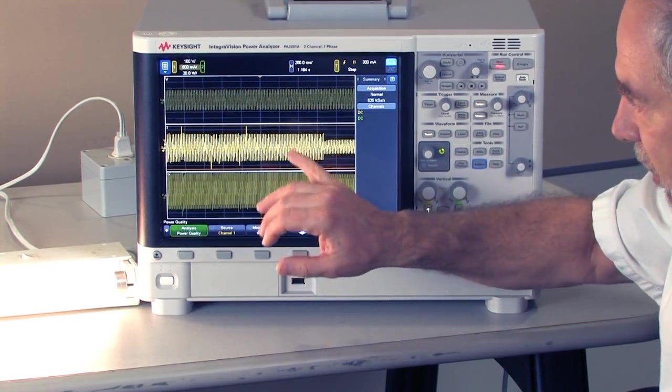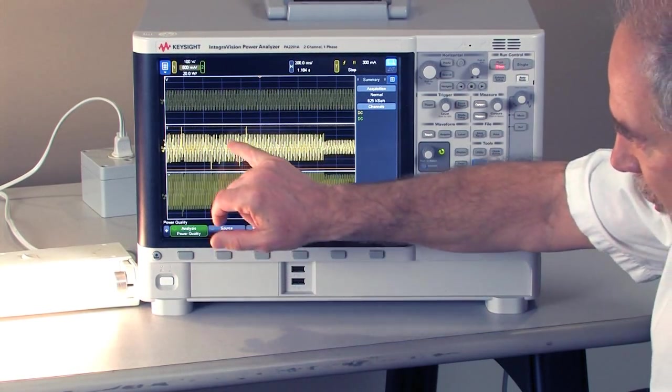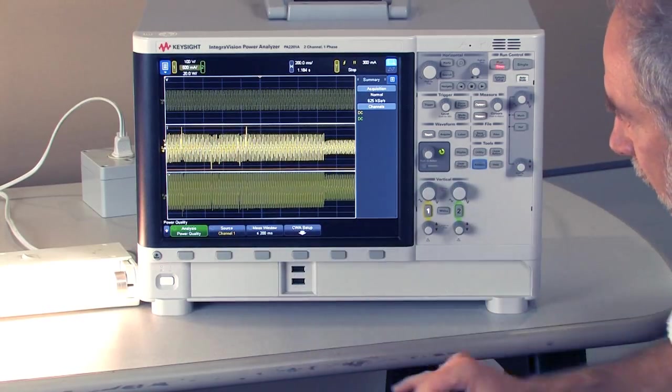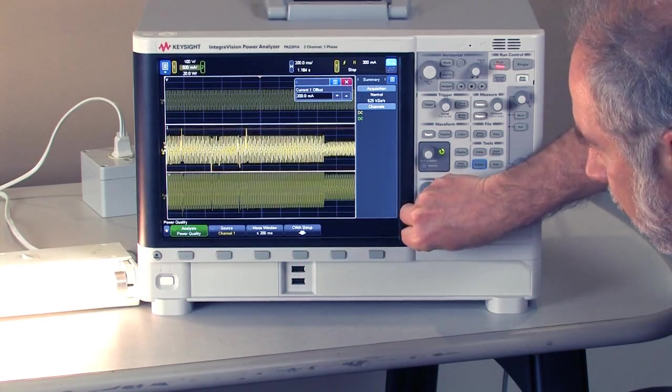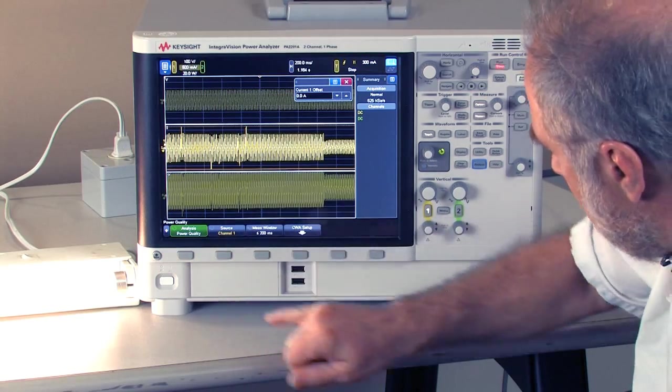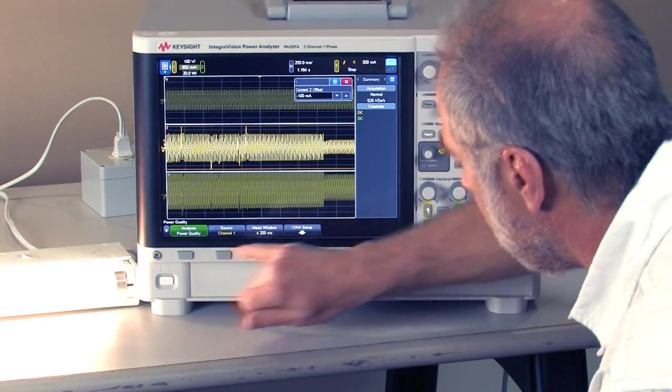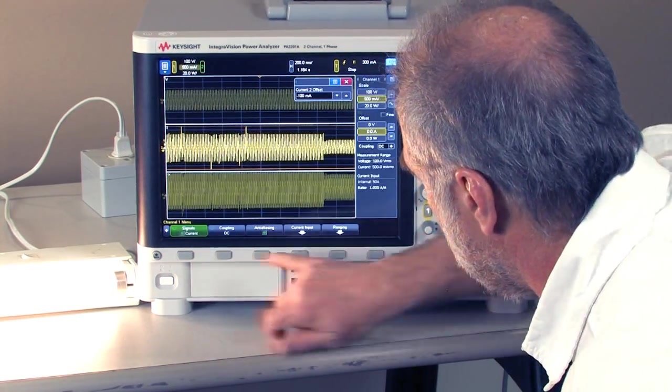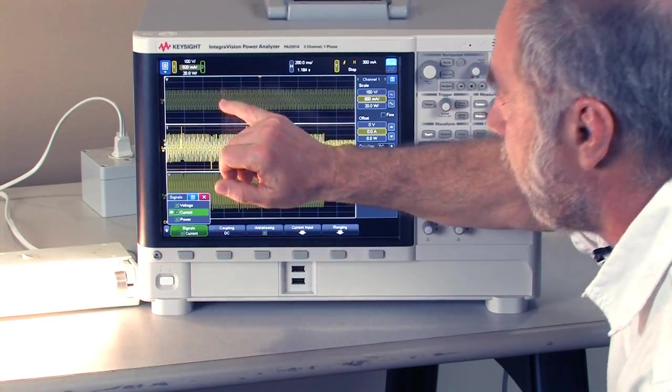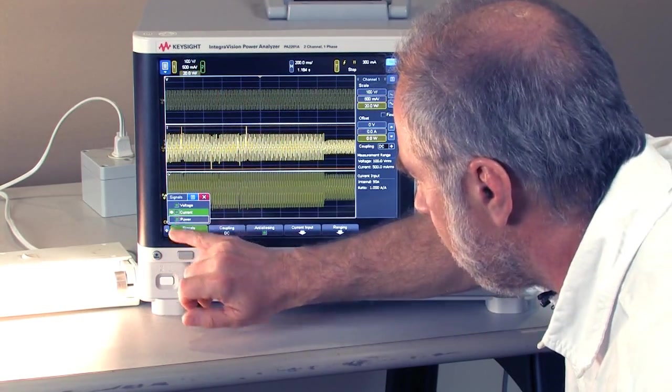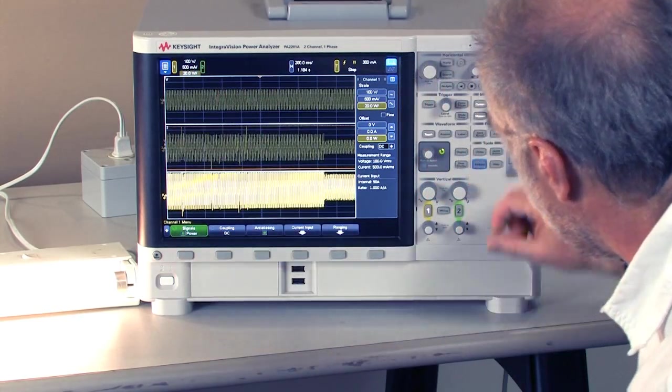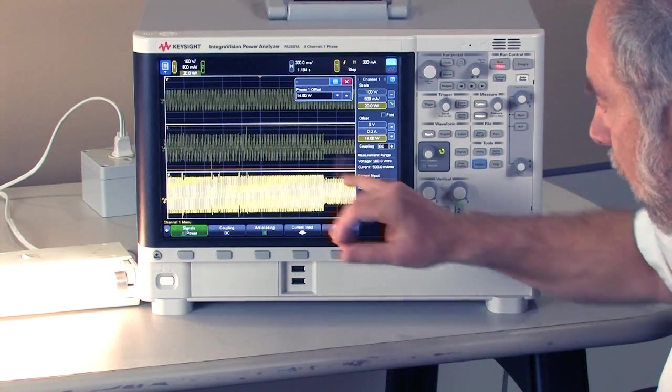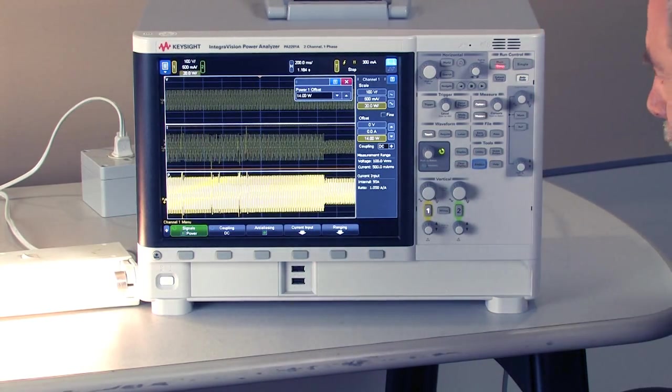So the important thing to see with the waveform is that it started off very high and our power is very high as well. Go to the power menu. You can look at either voltage, current, or power, or all three. So now I'm on the power menu. I can move that up and down. If I want to know how large that waveform is, we have a bunch of built-in measurements.